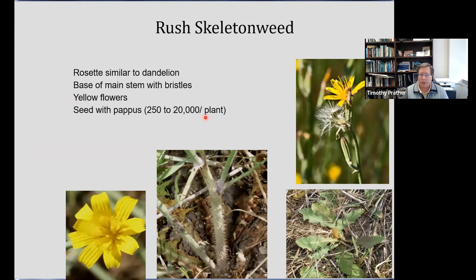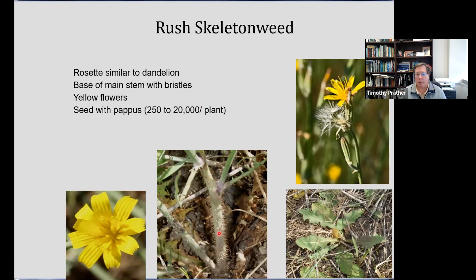This is also true for perennial grasses — we'll show you with rush skeletonweed. Rush skeletonweed is a problem across the state — in northern Idaho and southern Idaho — and it looks a lot like dandelion. We mentioned earlier it has yellow flowers and also has a milky juice, and sure enough this one does. It looks like dandelion when it's young, but when it sends up its flowering stems, you'll see bristles pointed back toward the base of the plant. That's a really key characteristic to knowing that you have rush skeletonweed.